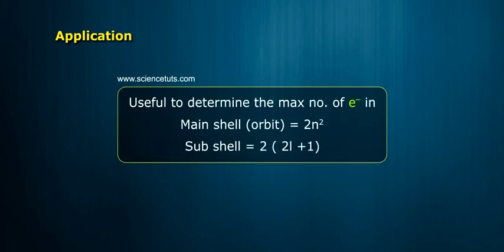Application: Useful to determine the maximum number of electrons in a main shell orbit is equal to 2n squared. Subshell is equal to 2 times 2l plus 1.